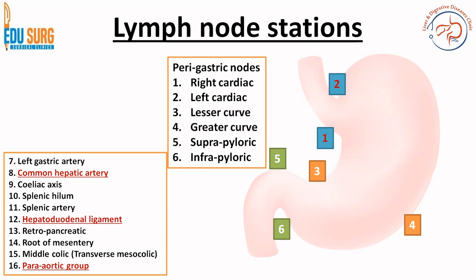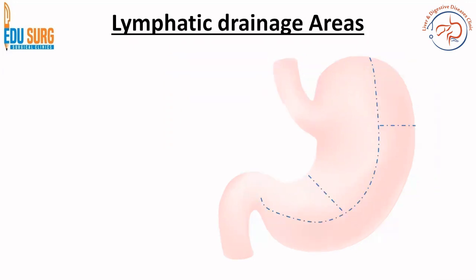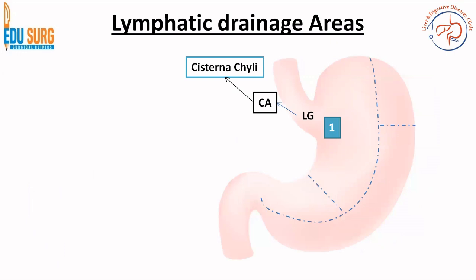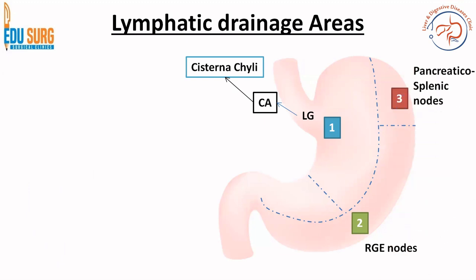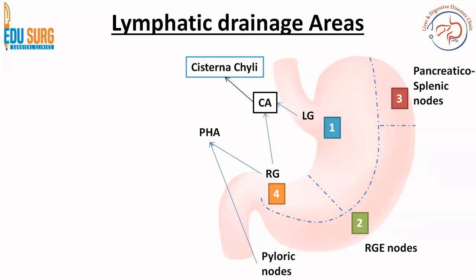This basic framework you should remember when lymph node drainage of stomach is asked. Further drainage areas in stomach are divided into four parts. The first drainage area is the left gastric which drains into the celiac axis nodes and these drain further into cisterna chyli and thoracic duct. The second group is the right gastroepiploic nodes, the third group is the pancreaticosplenic nodes, and the fourth group is the right gastric nodes and a small part of the pyloric nodes. All of these nodes basically will reach the celiac axis nodes finally to drain into the cisterna chyli.